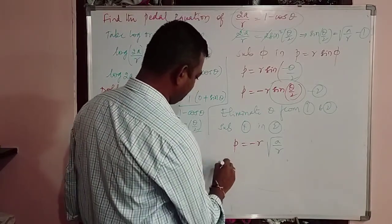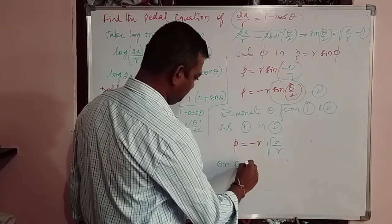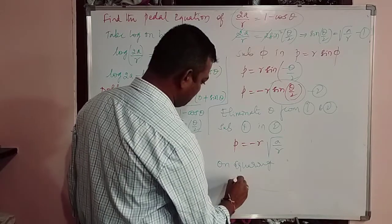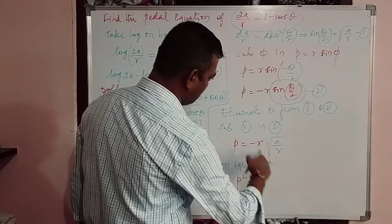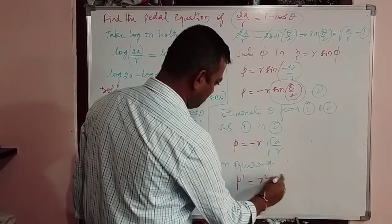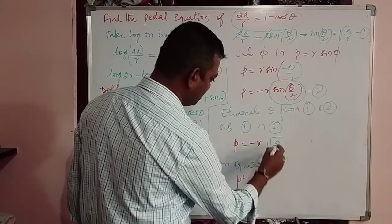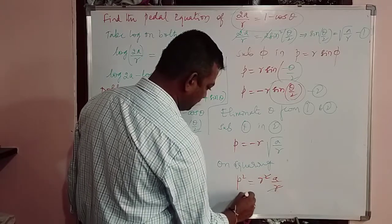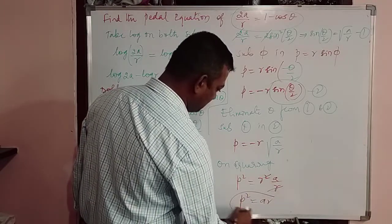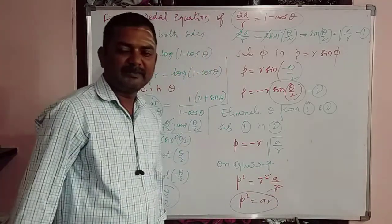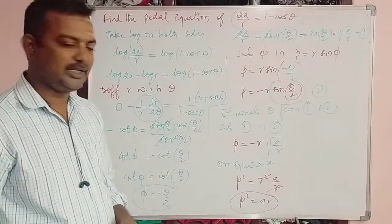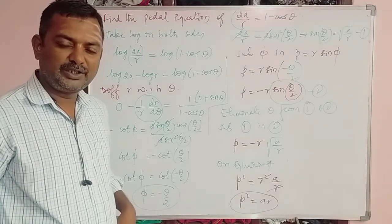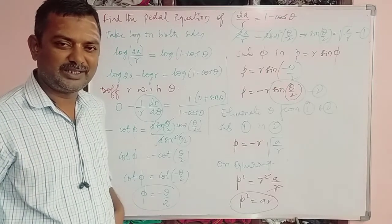Squaring both sides: p² = r²·(a/r) = ar. So p² = ar is the required pedal equation. Hope you understood the example. If you have any doubt, please mention it in the comment section.